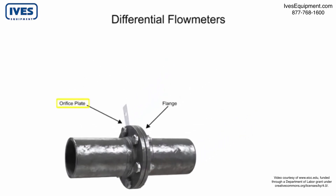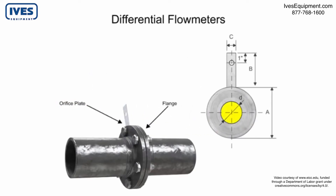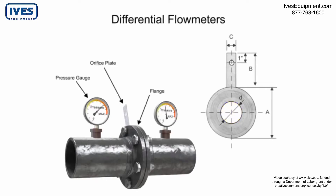The orifice plate of the flow meter is comprised of a circular metal disc with a specific hole diameter that reduces the fluid flow in the pipe. Pressure taps are added on each side of the orifice plate to measure the pressure differential.